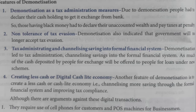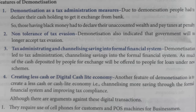Next is channelizing savings into a formal financial system. Demonetization led to better tax administration. The tax administration helped channel savings into a formal financial system. When people started to deposit their money, banks could offer loans from the cash deposited, providing funds back into the formal economy.